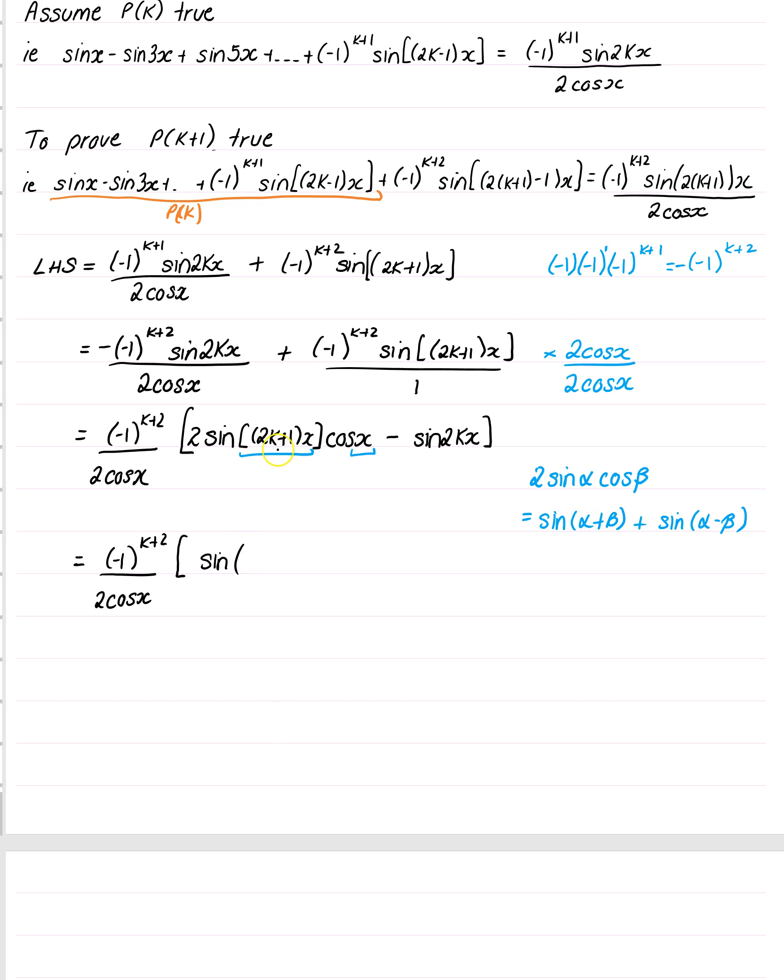Now alpha plus beta. So this becomes, I'm going to expand as I go along. 2k times x is 2kx plus 1 times x. And I add the beta, which is this x here. So I'm going to plus the x. And then the next term becomes plus sin.